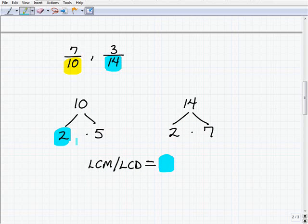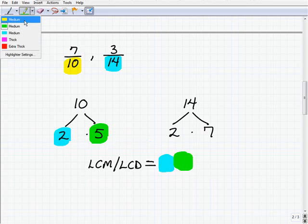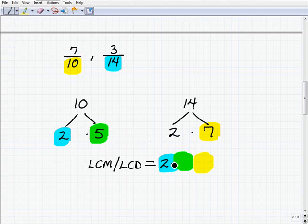We have a 2 here, but I only need one 2 represented in the highest power. Being that they're both 2 to the first, I just need a 2. I need a 5 here. And I also need a 7. Alright, so let's write those in.